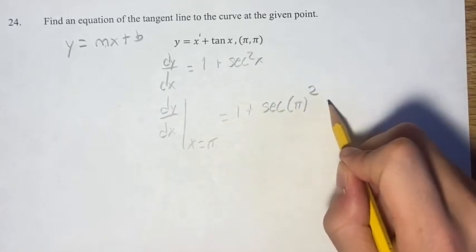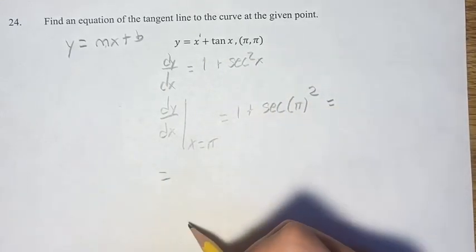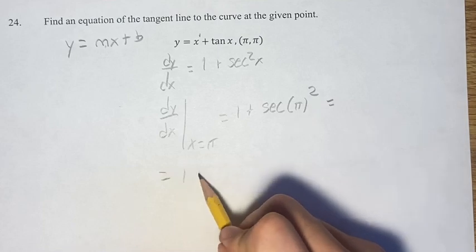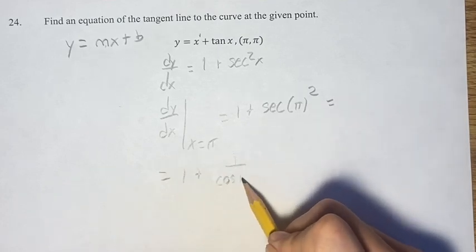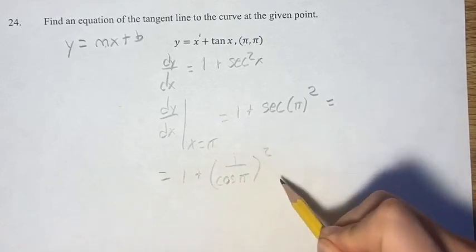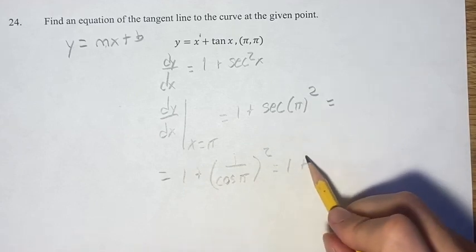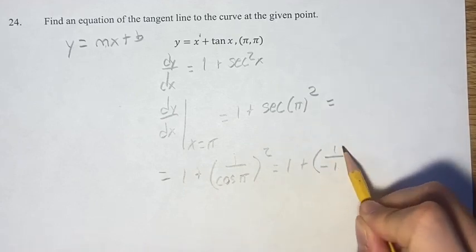What is secant of pi? Well, the secant is 1 over cosine, so you have 1 plus 1 over cosine pi squared. Cosine pi is negative 1, so you have 1 plus 1 over negative 1 squared.